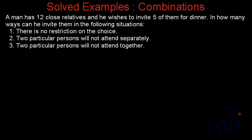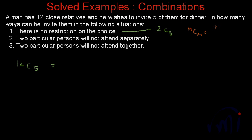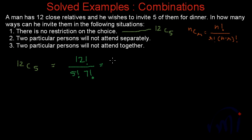The first situation is there is no restriction on the choices. If there is no restriction, he can select 5 people out of 12, which is 12C5. The formula for NCR is N factorial divided by R factorial multiplied by N minus R factorial. So 12C5 equals 12 factorial divided by 5 factorial multiplied by 7 factorial, which equals 792. There are 792 ways in which he can select any 5 relatives out of 12.